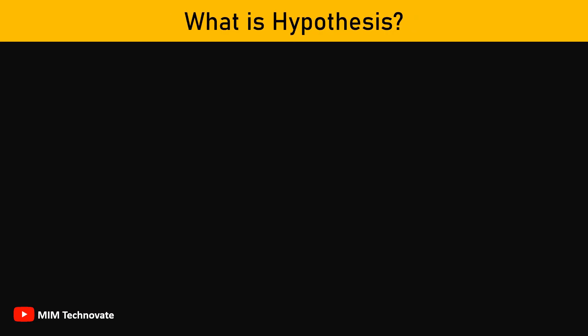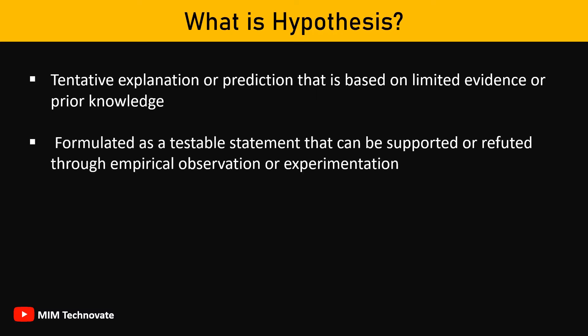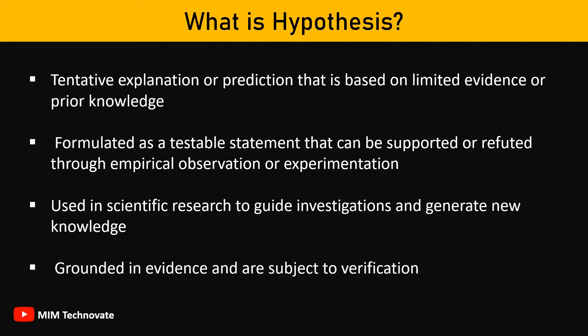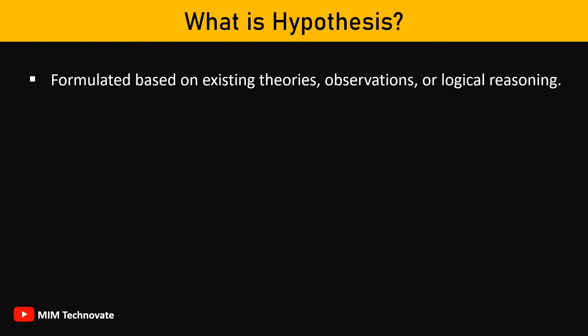What is a hypothesis? A hypothesis is a tentative explanation or prediction that is based on limited evidence or prior knowledge. It is formulated as a testable statement that can be supported or refuted through empirical observation or experimentation. Hypotheses are commonly used in scientific research to guide investigations and generate new knowledge. They are grounded in evidence and subject to verification, formulated based on existing theories, observations, or logical reasoning.